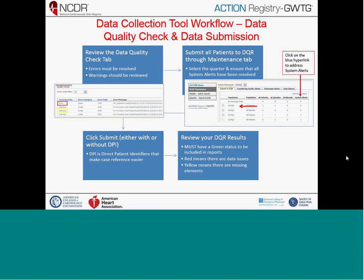System alerts correspond to the data quality check — the last section of the data collection tool. If you have system alerts, there will be a blue hyperlinked number you can click, which takes you to a list of cases where you need to go back, review the data quality check, address errors, and review warnings. Errors need to be fixed; warnings just need to be viewed. This is also true any time you edit data after a prior submission.